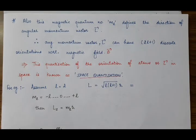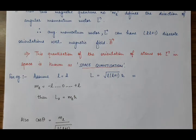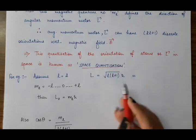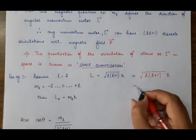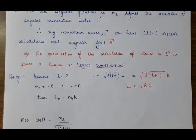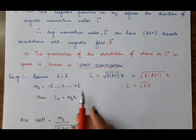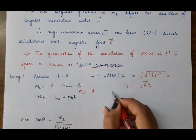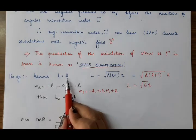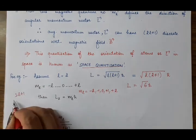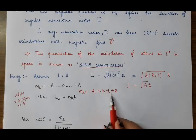Let's take an example. Suppose the orbital quantum number l equals 2. Then the orbital angular momentum L equals sqrt(2×(2+1))·h-bar = sqrt(6)·h-bar. Corresponding to l equals 2, the values of ML range from minus 2 to plus 2: that is minus 2, minus 1, 0, plus 1, plus 2 — giving 2l+1 equals 5 values of ML.